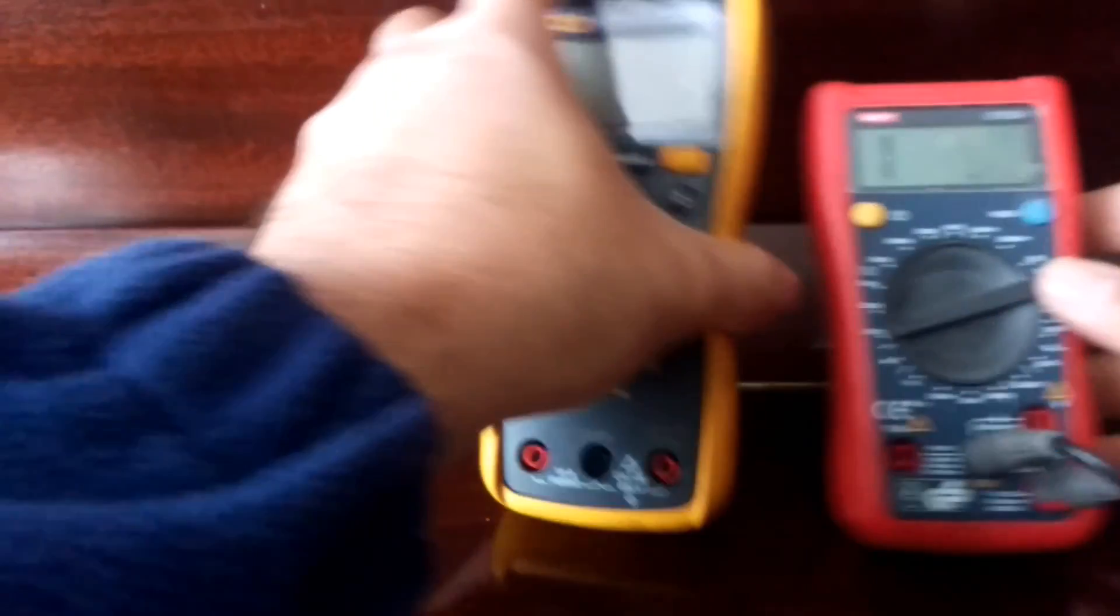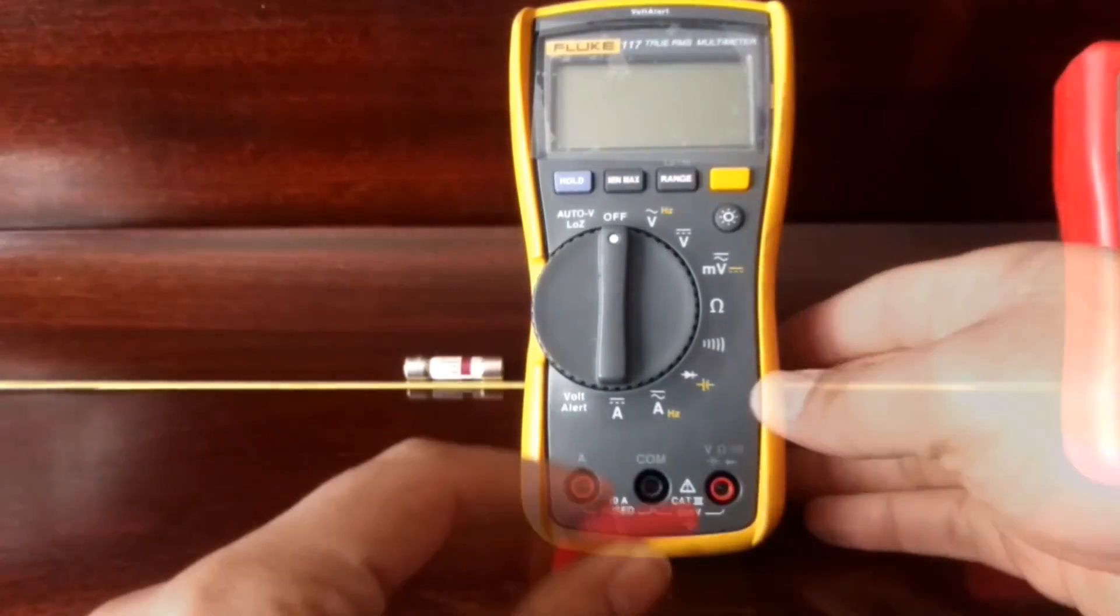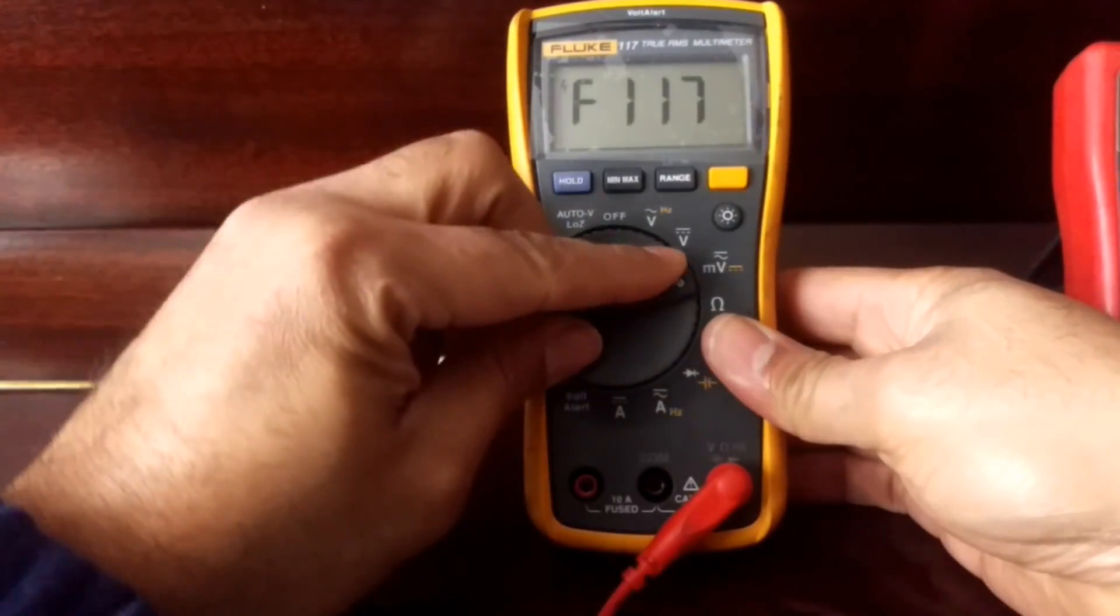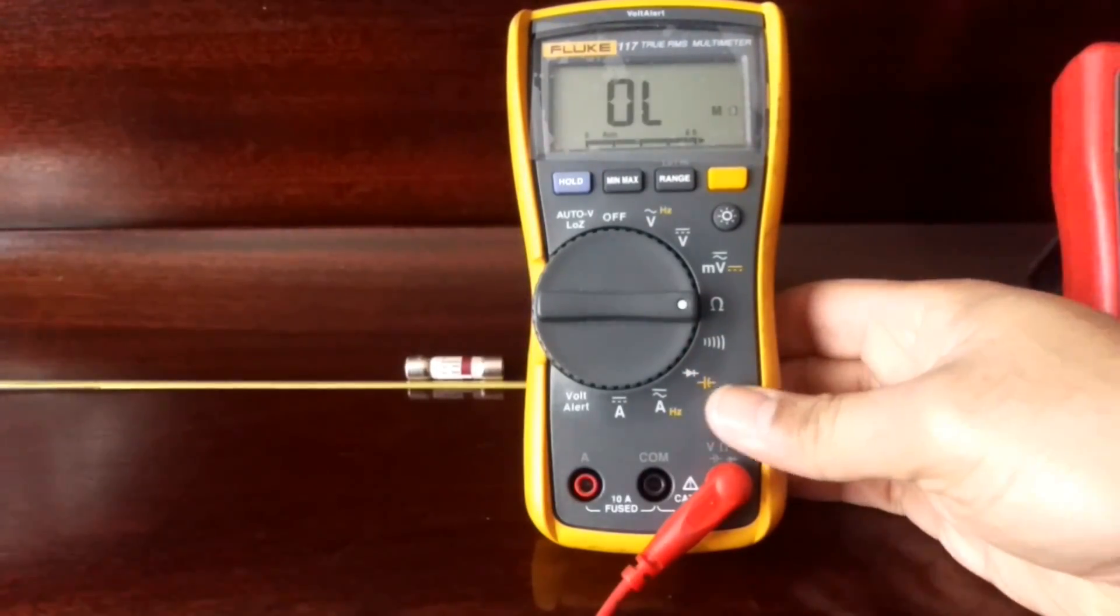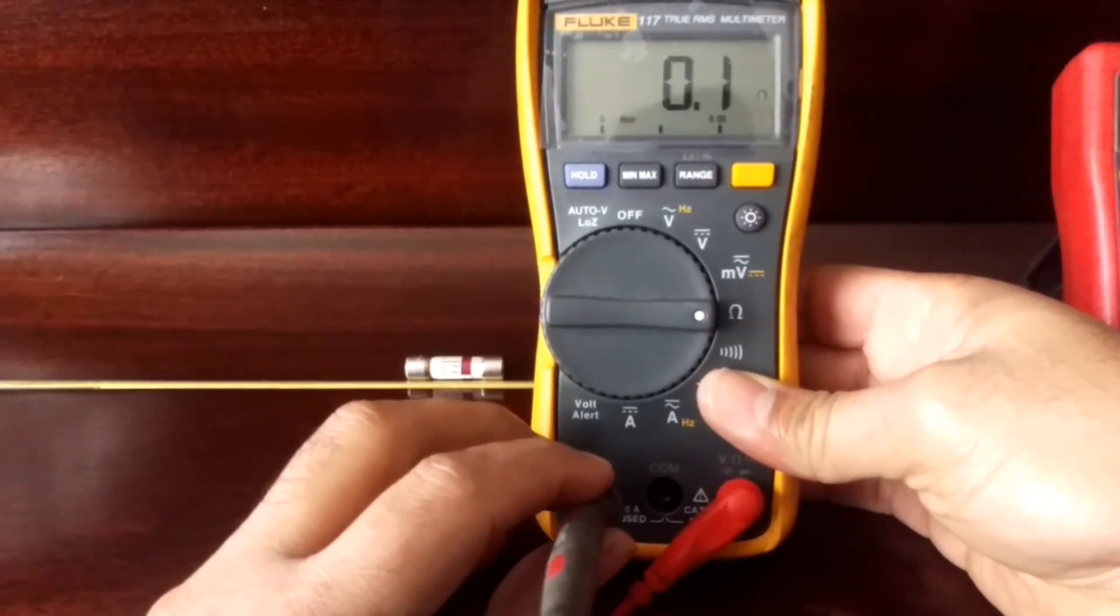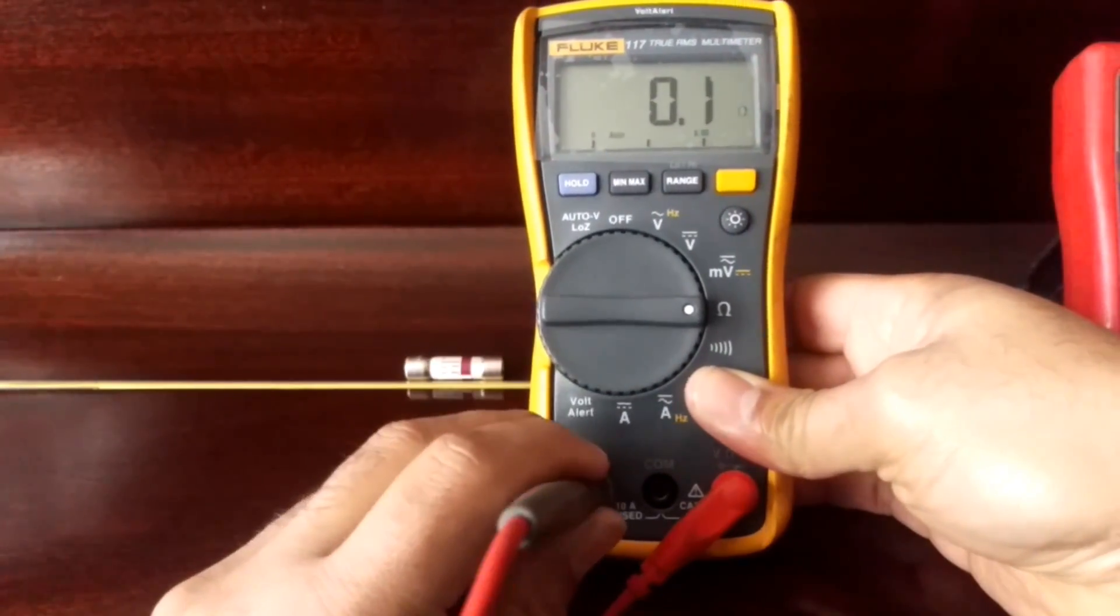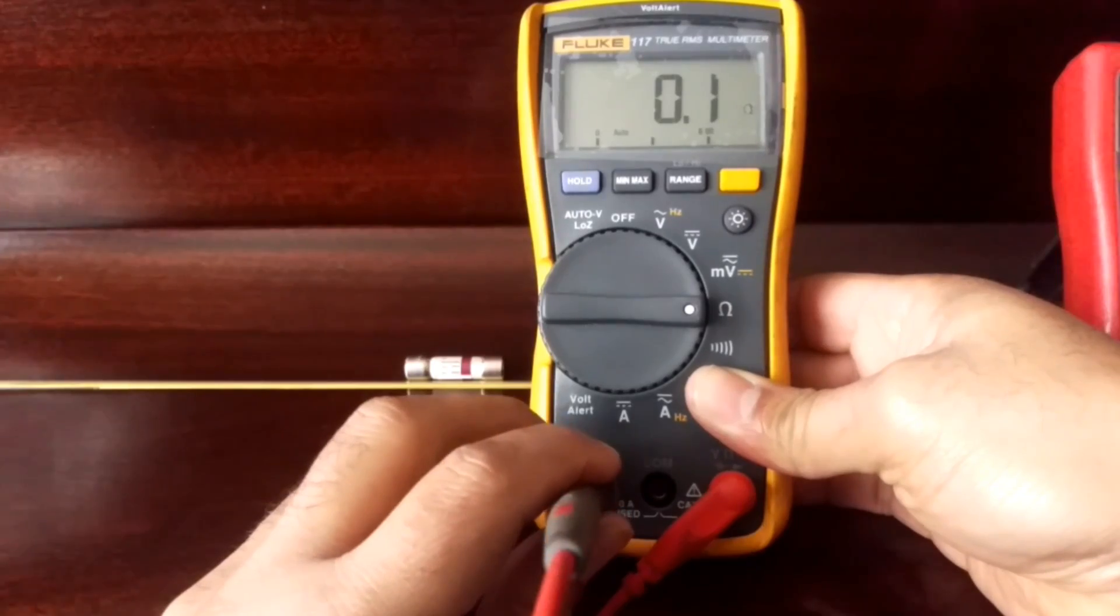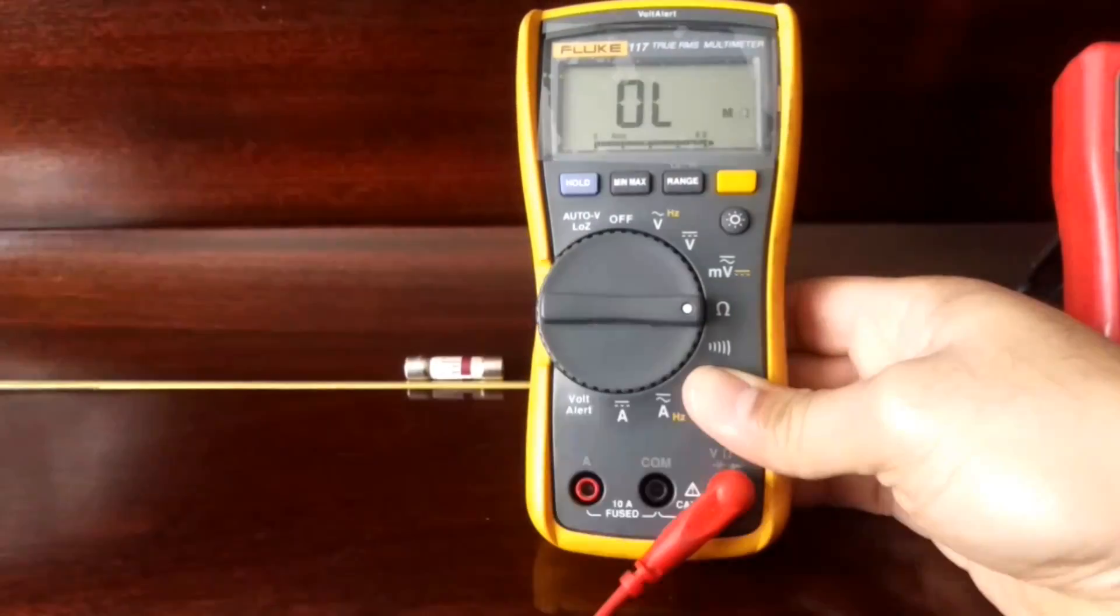And once the cover's all in place, it's just a question then of redoing that simple test. Put in the red lead in resistance. Turning it to the resistance setting. And just bridging the contact with the amps. And instead of having OL overload, I've now got a nice low resistance reading showing the fuse is back and ready to do its job again.